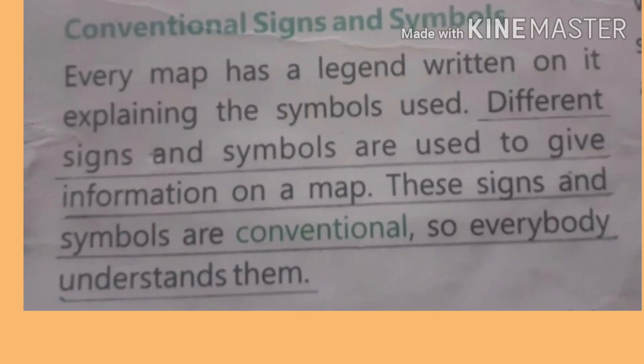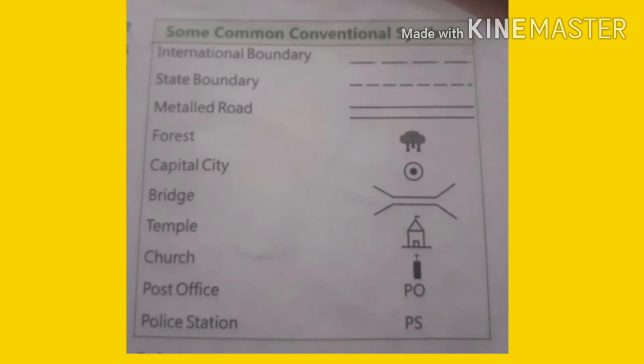Every map has a legend written on it explaining the symbols used. Different signs and symbols are used to give information on a map. These signs and symbols are conventional, so everybody can understand them. Let us see some common conventional symbols — state boundary is shown like that, forest is shown with trees.